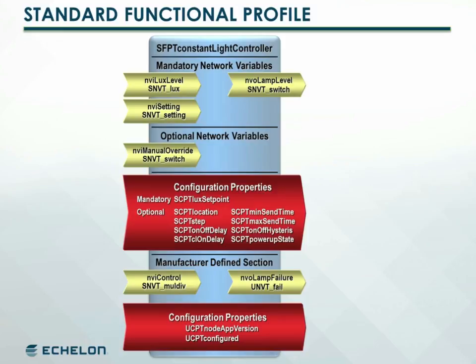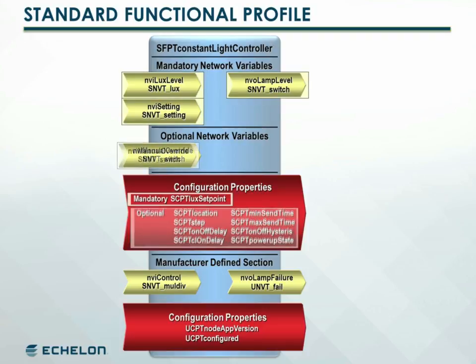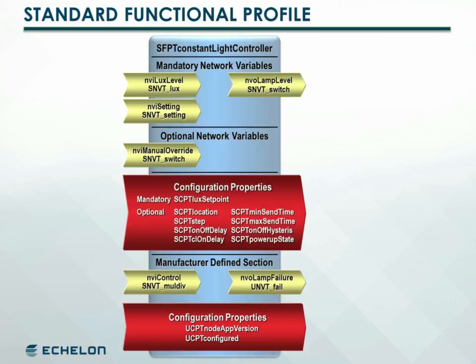The functional profile specifies whether or not each network variable or configuration property is mandatory or optional. For a device to become LawnMark certified as interoperable, it must implement all the mandatory network variables and configuration properties defined. The device may implement some, all, or none of the optional network variables and configuration properties. A manufacturer may also include additional network variables and configuration properties, as long as they are defined in a standard way and the manufacturer supplies resource files for non-LawnMark defined network variables and configuration properties. A device with additional elements can still be LawnMark certified.